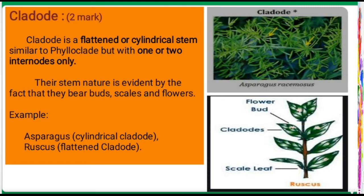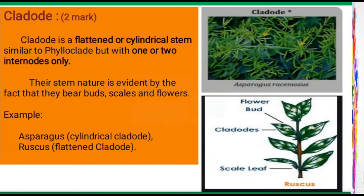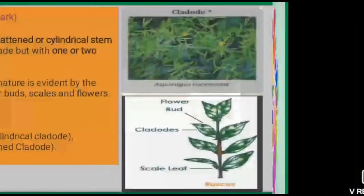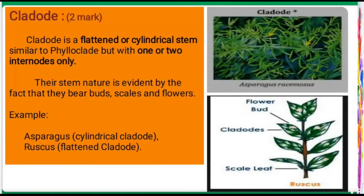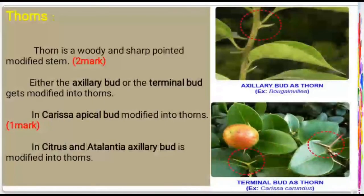The first example is Asparagus — cylindrical-shaped cladode with leaf-like texture. The second example is Ruscus — a flat, tender cladode. In Ruscus, the stem has leaf-like texture and flat tender structure. The next topic is thorn.